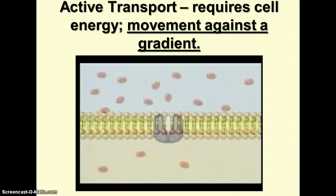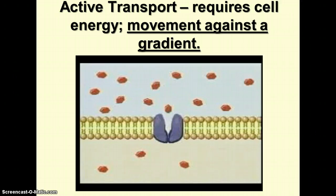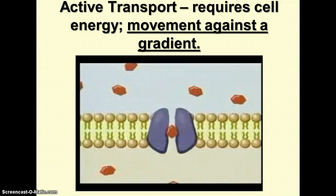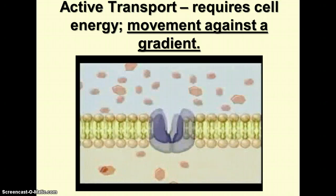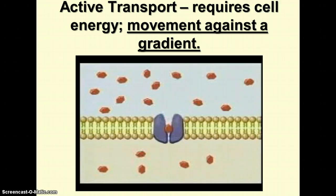Large molecules are transported across the membrane by carrier proteins in the membrane. Glucose, a sugar, is one molecule transported in this way. Glucose attaches to the carrier protein, which changes shape and releases the glucose molecule inside the cell. In this way, glucose is moved down its concentration gradient from the area of higher concentration to the area of lower concentration. Like diffusion, this process, called facilitated transport, requires no energy. It is, therefore, another example of passive transport.